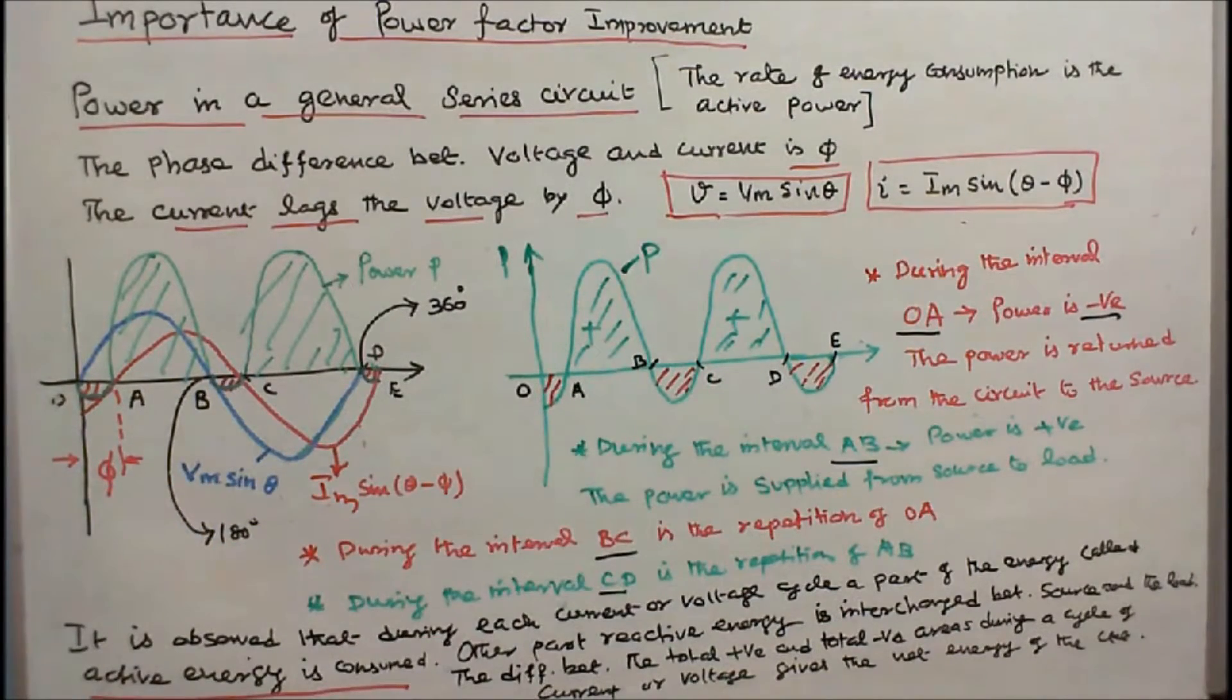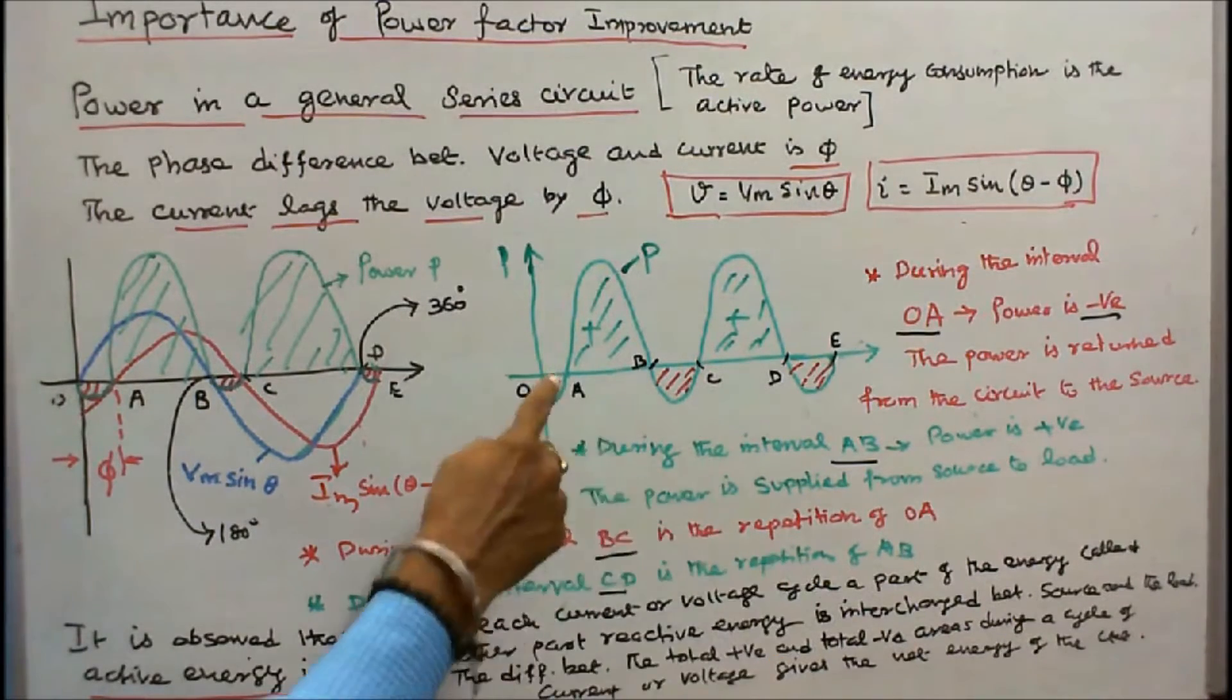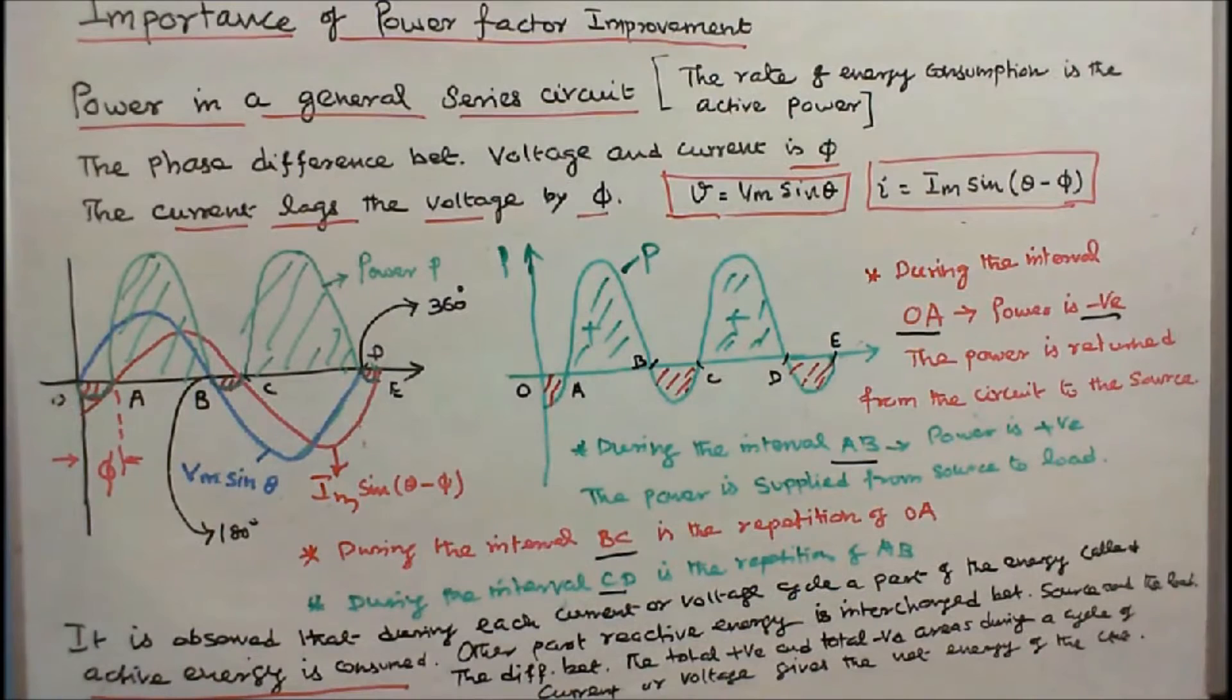It is observed that during each current or voltage cycle, during the interval B-C the power is negative. A part of energy called active energy is consumed. Other part, reactive energy, is interchanged between source and the load.